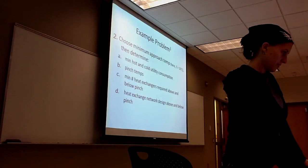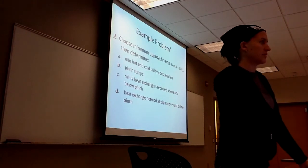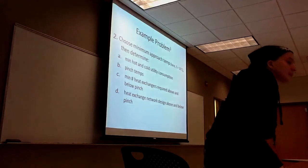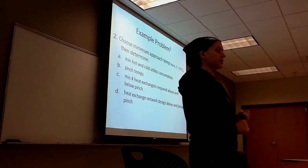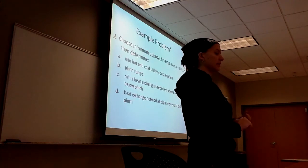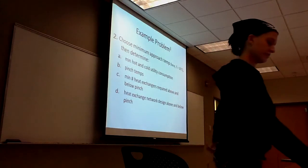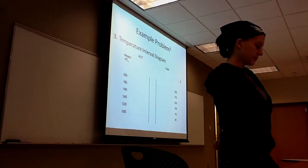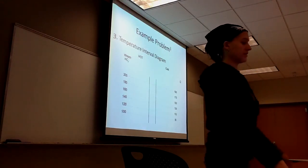Next, you have to choose the minimum approach temperature. In this case, it's 10 degrees Celsius. Then you determine the minimum hot and cold utility consumptions, the pinch temps, and the minimum number of heat exchangers. Your temperature interval diagram, when you start off, looks like this.